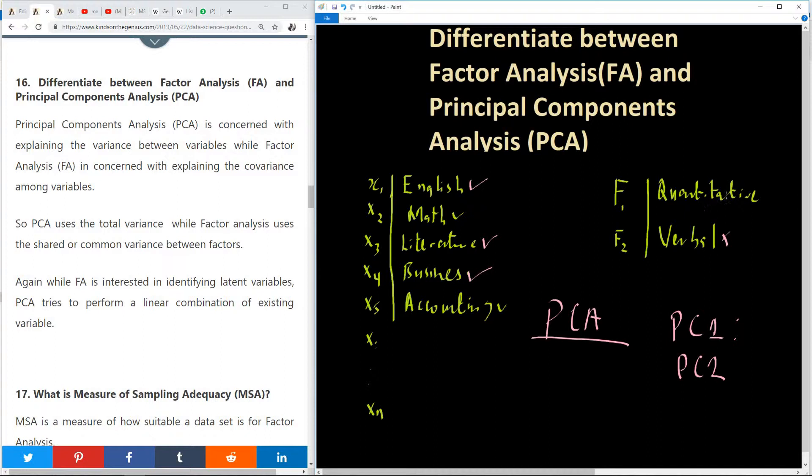So in case of F1 and F2, we can say that F1, let me try to use a line to relate. So this F1, which is quantitative, relates to maths, also relates to accounting, right? But F2 relates with English, relates with literature, and relates with business. So we've used two factors to explain the common variance.